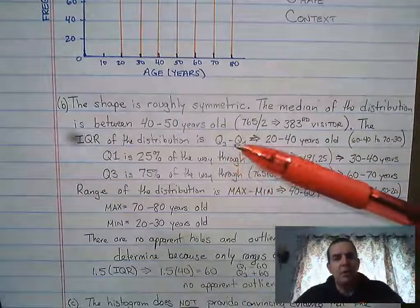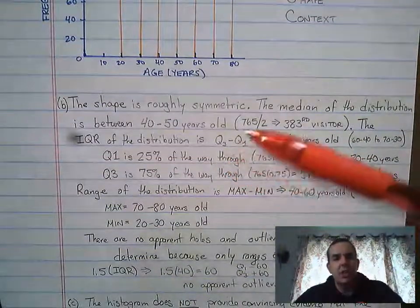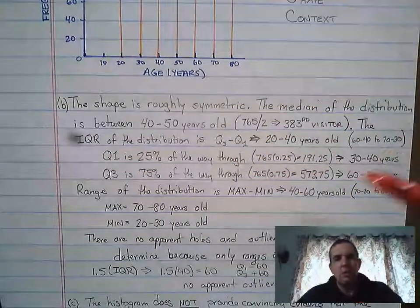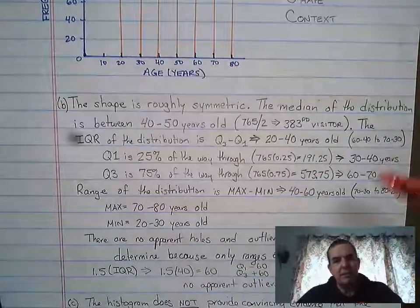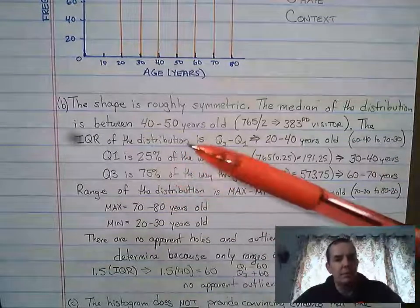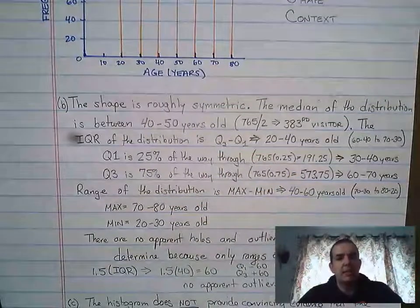But remember that IQR is a number. So it's not just a number to a number. So we wouldn't say 30 to 40 years to 60 to 70 years, we need to figure out the difference between the two. Just as a reminder, quartile one is 25% of the way through the data and quartile three is 75% of the way through the data.